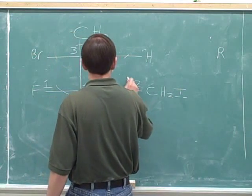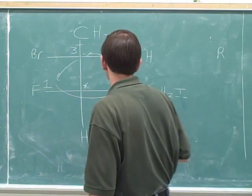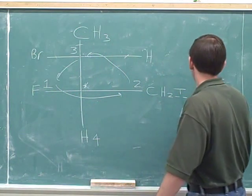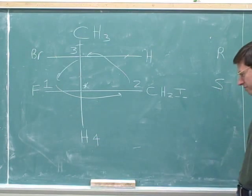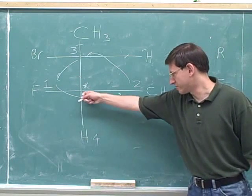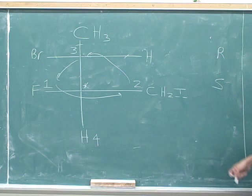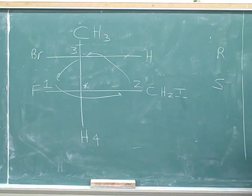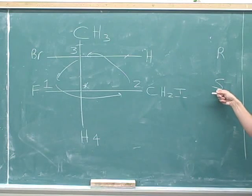So we just look at the configuration on the page: 1 to 2, 2 to 3, back to 1. That is counterclockwise, or S. There's no need to cross this letter out since we didn't make any swaps, so the first letter we write down is also the correct configuration. This bottom stereocenter has an S configuration. We already decided that the top stereocenter has an R configuration.